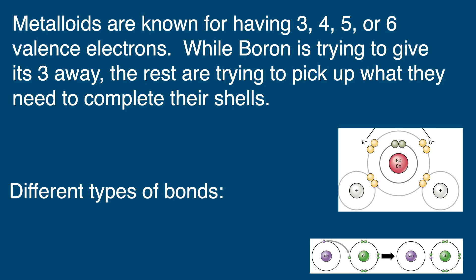Now metalloids are known for having three, four, five, or six valence electrons. While boron is trying to give its three away, the rest are trying to pick up what they need to complete their shells.